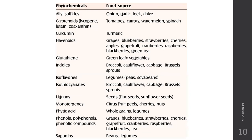The textbook and the screen contain a table of different phytochemicals and their best sources. Allyl sulfides are found in onion, garlic, leek, and chives. Carotenoids are found in all yellow, red, and orange fruits and vegetables like tomatoes, carrots, watermelon, and spinach. Curcumin is found in turmeric. Flavonoids are found in red grapes, blueberries, strawberries, cherries, apples, grapefruit, cranberries, raspberries, and green tea. Glutathione is in green leafy vegetables. Indoles are in broccoli, cauliflower, and cabbage.